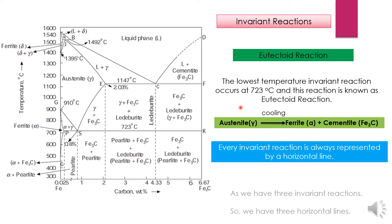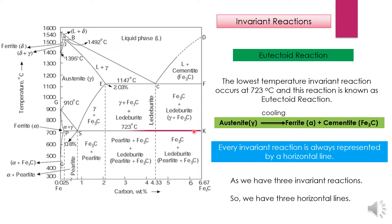As we have three invariant reactions, we have three horizontal lines: one at 723 degrees centigrade, second one at 1147 degrees centigrade, and the third one at 1492 degrees centigrade.